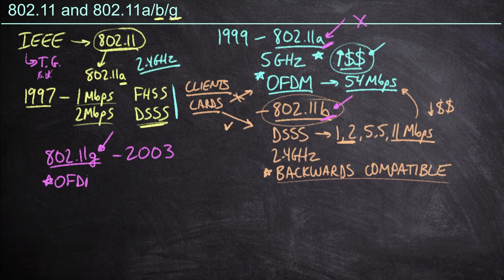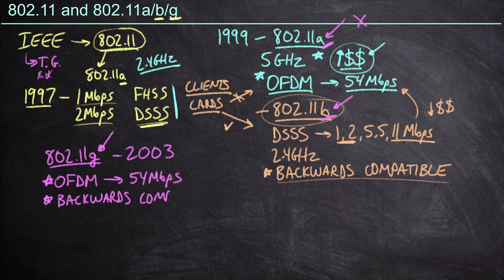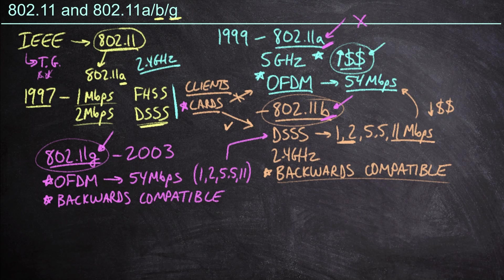802.11g uses OFDM — orthogonal frequency division multiplexing — which gives us the ability to support up to 54 megabits per second. And the big deal is that it is backwards compatible. I don't have to upgrade all of my 802.11b clients; I can install 802.11g access points and slowly upgrade my 802.11 and 802.11b cards. We can also support the 1, 2, 5.5, and 11 megabits per second rates from 802.11b via DSSS, while with an 802.11g client I'll use OFDM at 54 megabits per second, stepping down to 48, 36, 24, and so on. OFDM introduces a whole range of data rates depending on signal quality.